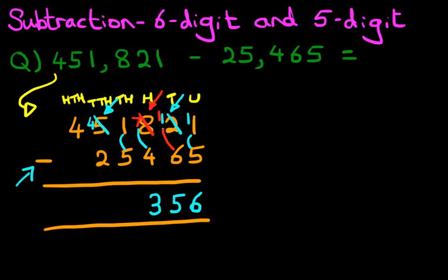And the 1 we are taking from here, we're going to put it over here. So the thousands column is no longer 1 minus 5. It has now become 11 minus 5. 11 minus 5 is... That's right, it is 6.